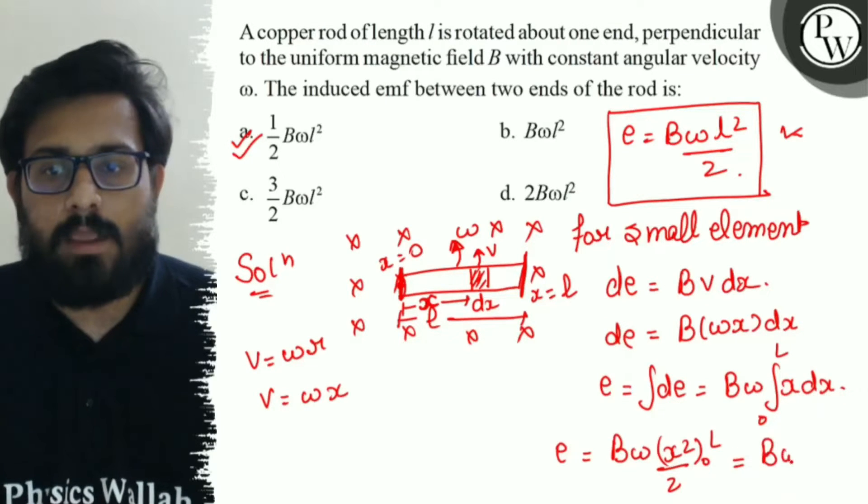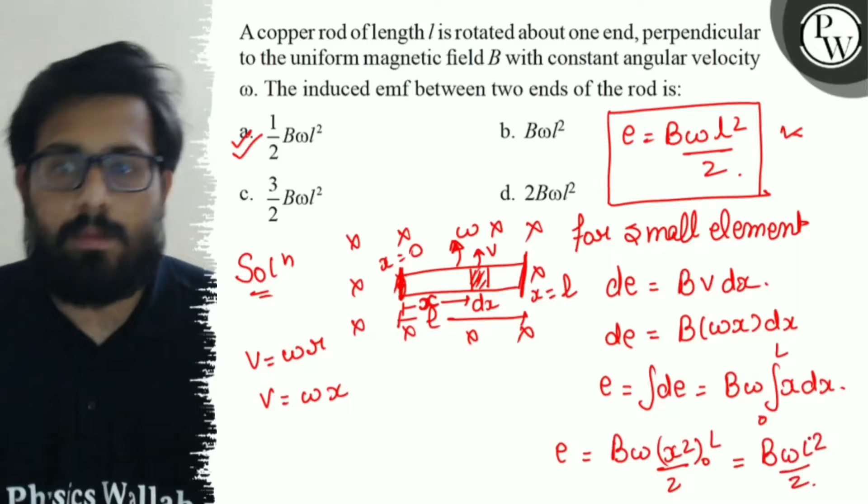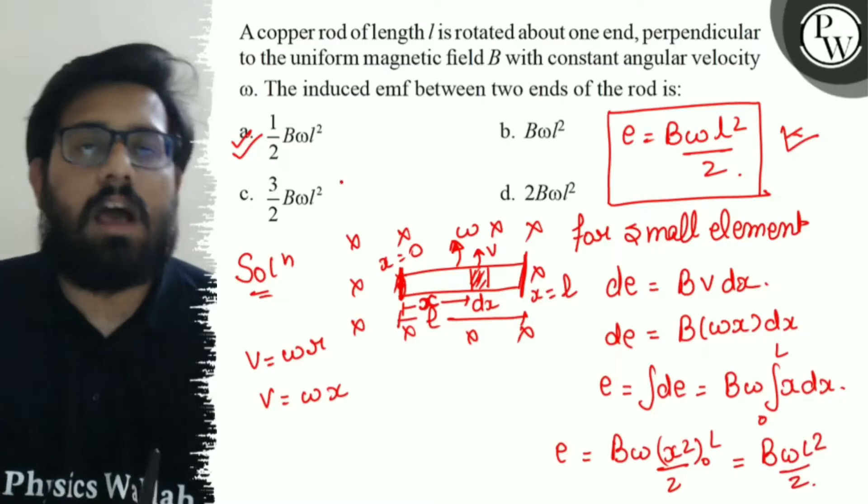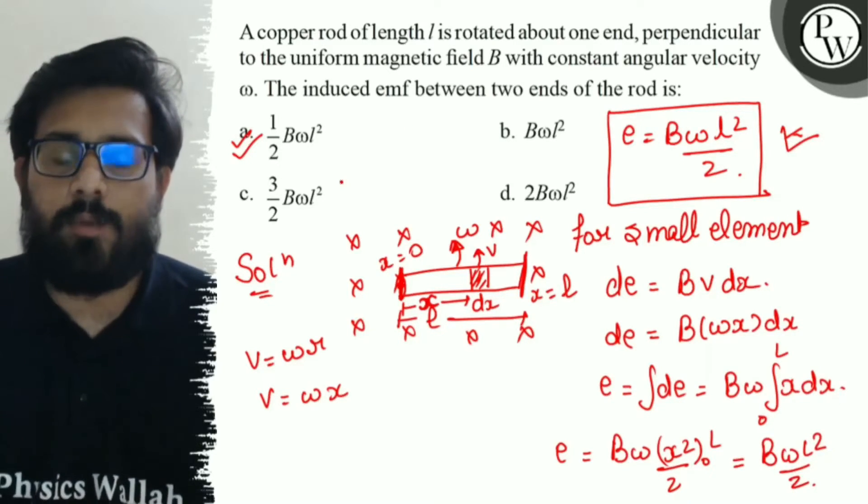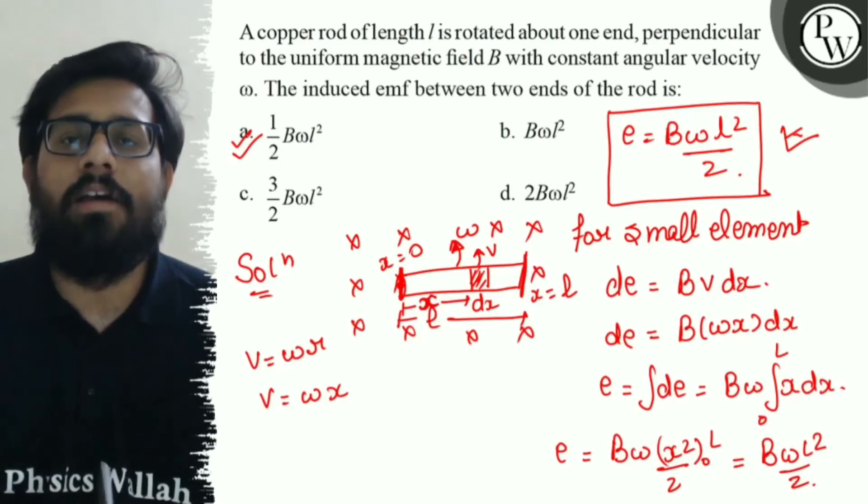Simplifying, B omega L square by 2. So, this is the final answer we have, half B omega L square. I hope you got the concept of this question. All the very best.